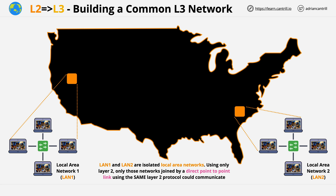Additionally, each layer 2 network uses a shared layer 2 protocol. In the example so far, this has been Ethernet. Any networks where we're only using layer 2, if we want them to communicate with each other, they need to use the same layer 2 protocol to communicate with another layer 2 network.